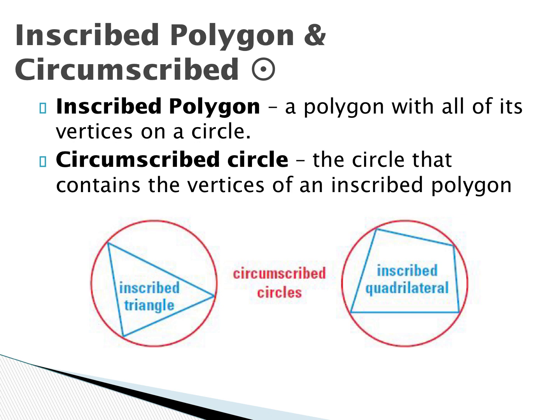An inscribed polygon is a polygon with all of its vertices on a circle. A circumscribed circle is the circle that contains the vertices of an inscribed polygon. Those red circles are circumscribed circles and the blue shapes are inscribed polygons — inscribed means inside, circumscribed means outside surrounding the figure.